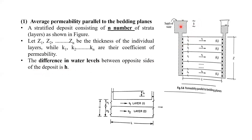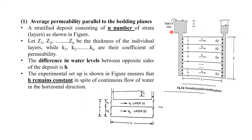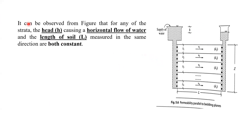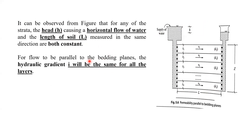As we have also studied in Darcy's law, H by L is the hydraulic gradient. So the head loss from this side to this side is H, and L is the length of the strata. In this experimental setup, H remains constant in spite of continuous flow of water in the horizontal direction, and L is also constant. So the hydraulic gradient will also remain constant for each layer — it will be the same I for all layers.